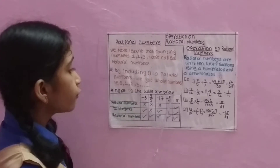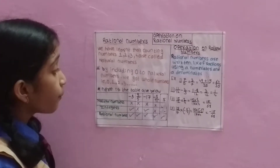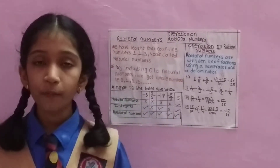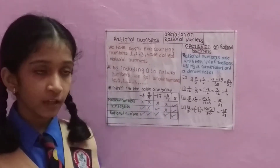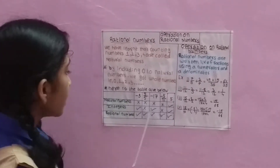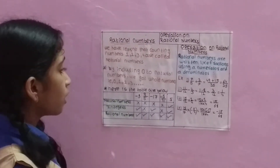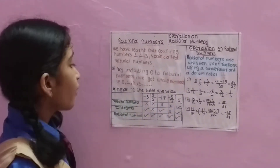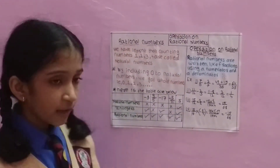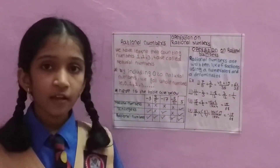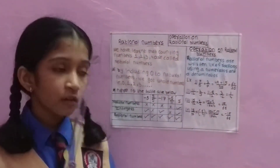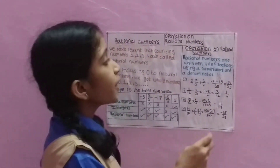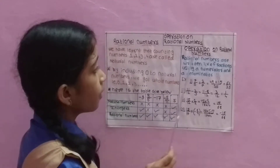Minus 5 upon 11 is not a natural number and it is not an integer — it is a rational number. 5 is a natural number, an integer, and a rational number. Now, the operation of rational numbers.